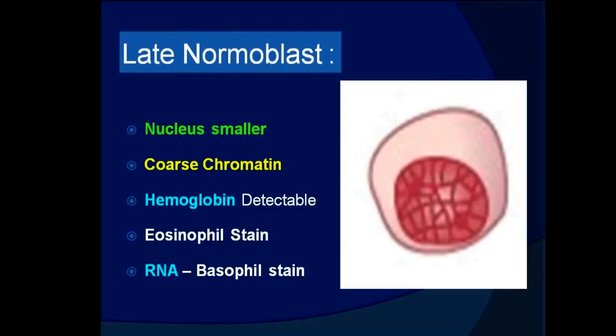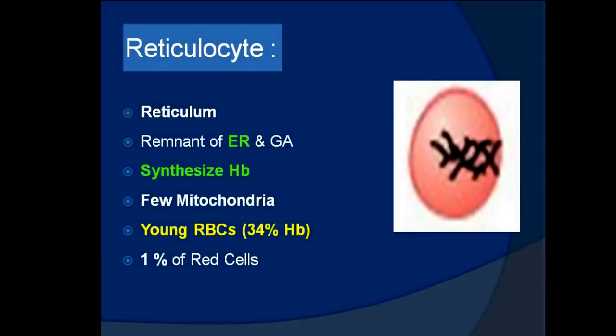The late normoblast has a smaller nucleus with coarse chromatin, hemoglobin is detectable, eosinophil staining is seen, and basophil RNA staining is also present. The reticulocyte contains reticulum remnants of ER, synthesized hemoglobin, and a few mitochondria. These nucleated RBCs (nRBCs) are about 1% of red cells.